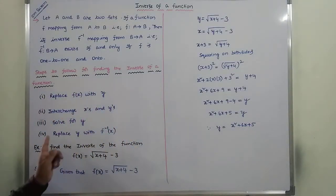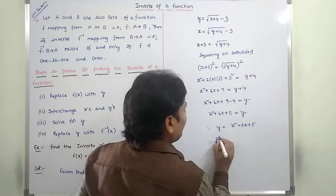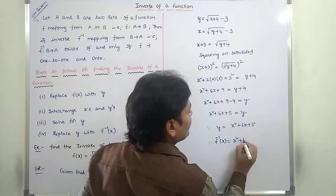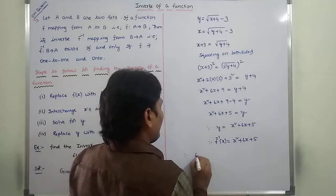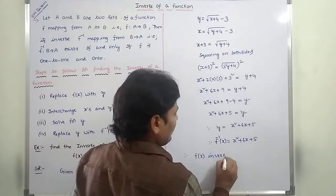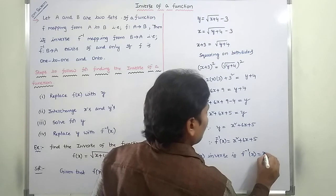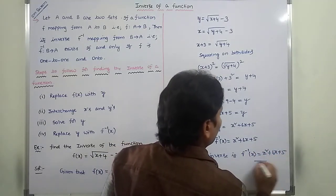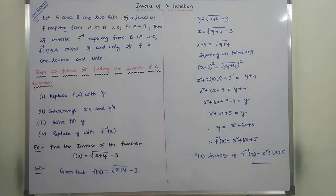After finding Y in the third step, replace Y with F inverse of X. Therefore, F inverse of X is equal to X squared plus 6X plus 5. This is how we find the inverse of a given function.